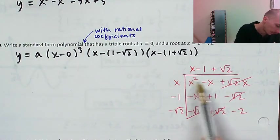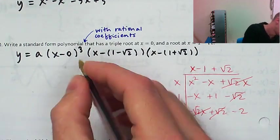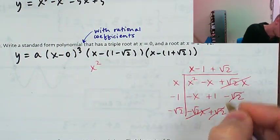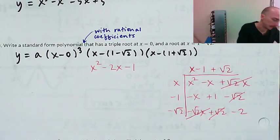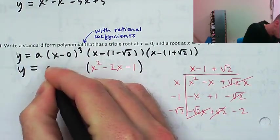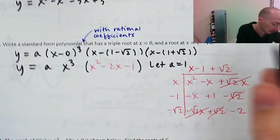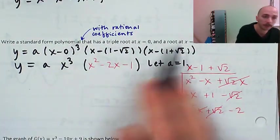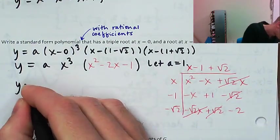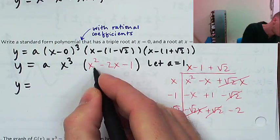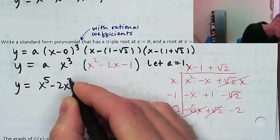So I've got x squared minus 2x minus 1. With a equal to 1, I'm going to distribute x to the third onto x squared, negative 2x, and negative 1. That gives x to the fifth minus 2x to the fourth minus x to the third.